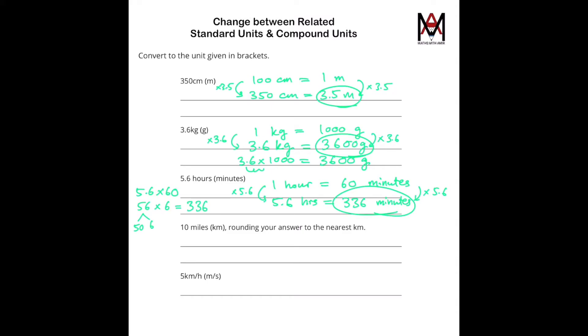Right, the next question. 10 miles into kilometers, and we need to round our answer to the nearest kilometer. So we know that 1 mile equals 1.61 kilometers, round it to 1.6 kilometers to one decimal place. And then we need to change this to 10 miles. So for 10 miles, it's multiplied by 10, so we multiply this by 10. So this must be 1.6 times 10, that's 16 kilometers.